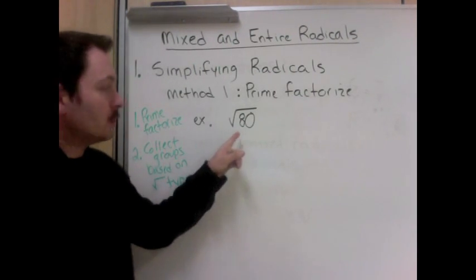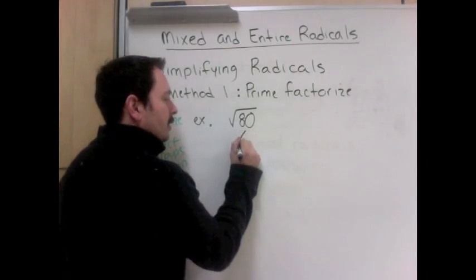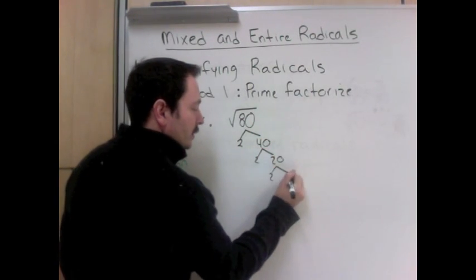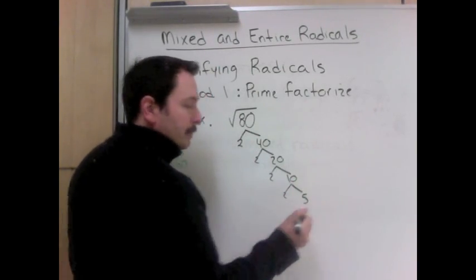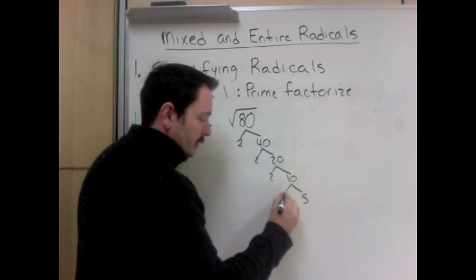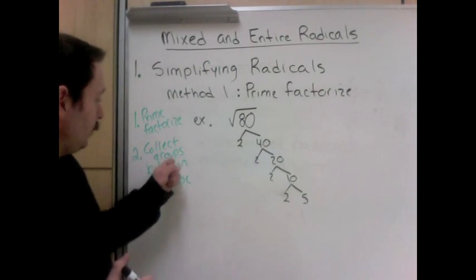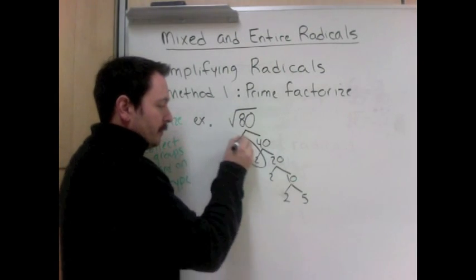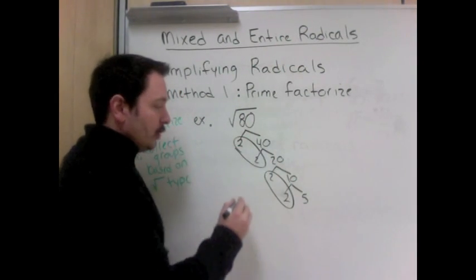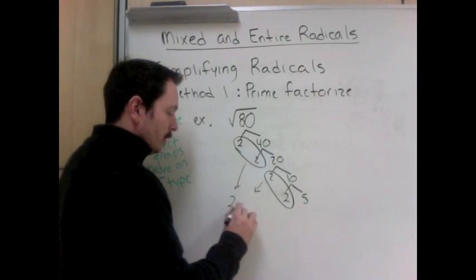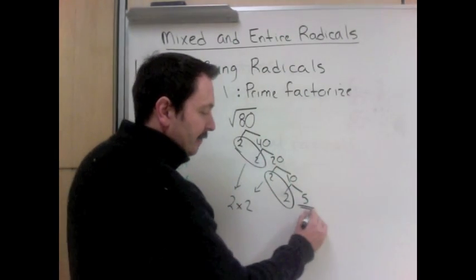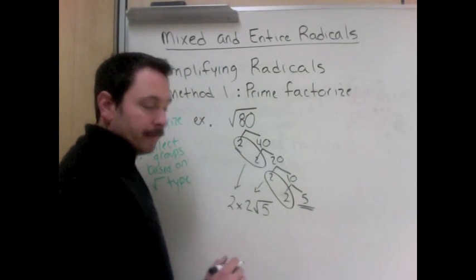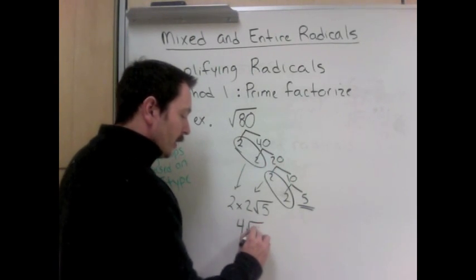So square root of 80, step 1, prime factorize. 80 is 2 times 40, 40 is 2 times 20, 20 is 2 times 10, 10 is 2 times 5. I'm just going to make this one a little bigger so you can see it on the video. So step 2, collect groups based on the root type. This is a square root, so I'm looking for pairs. A pair of 2's and a pair of 2's. So I have 2 times 2 and anything that's left over just goes back in the root. So 2 times 2 root 5, so 4 times the square root of 5.